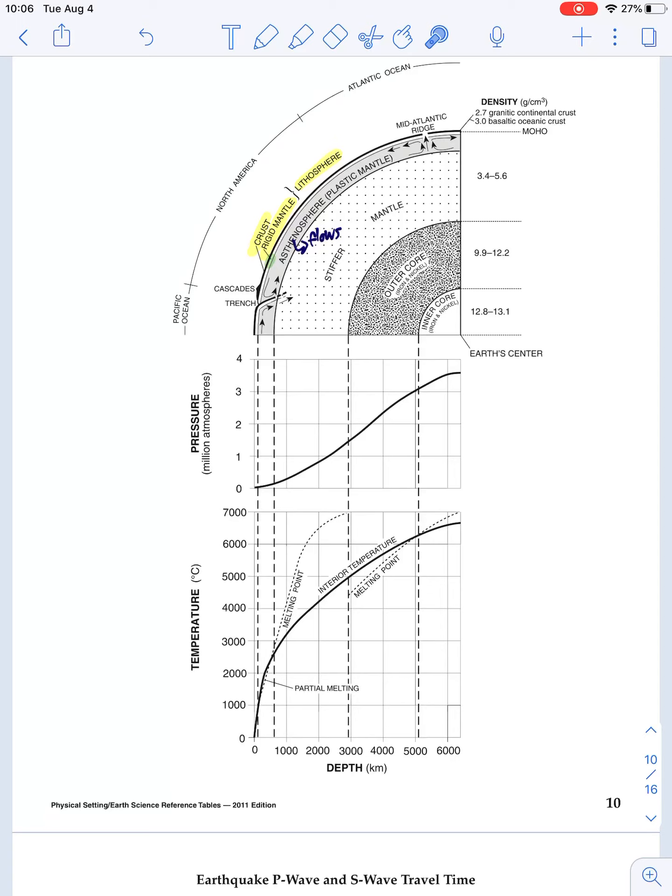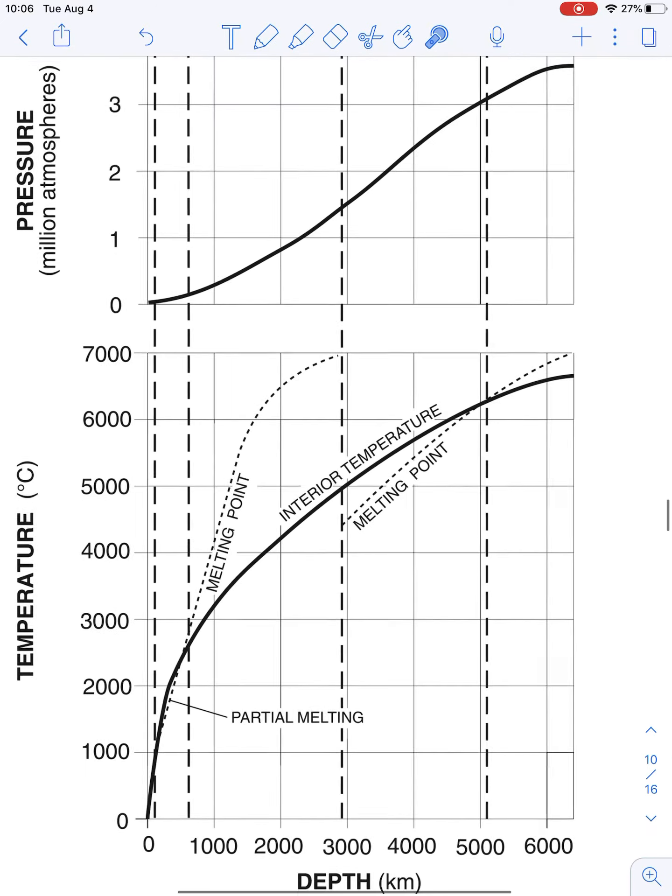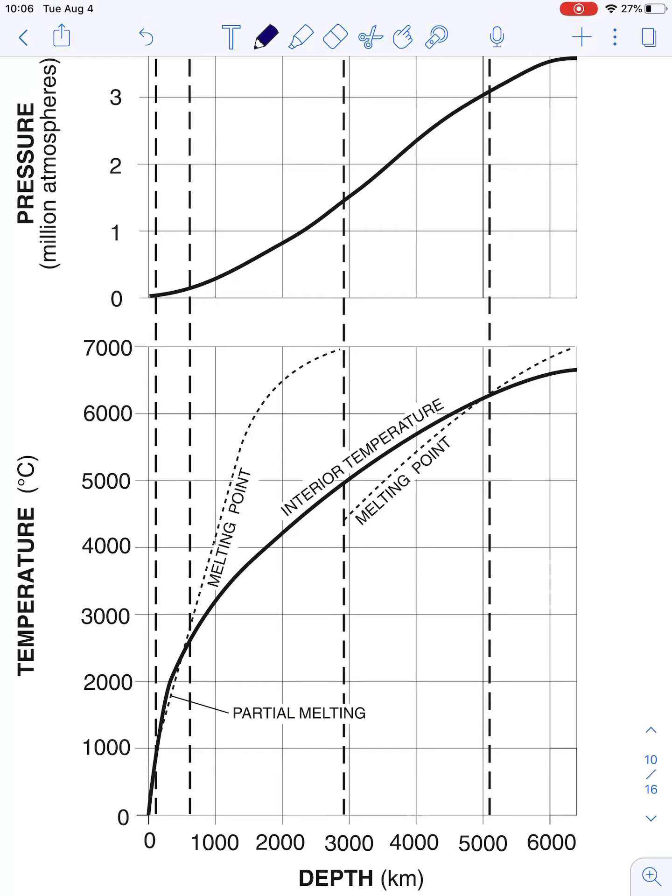Now, if something's temperature is below its melting point, that means that it is a solid. It has not melted yet. If something's temperature is above its melting point, that means it has melted, that means it is a liquid.